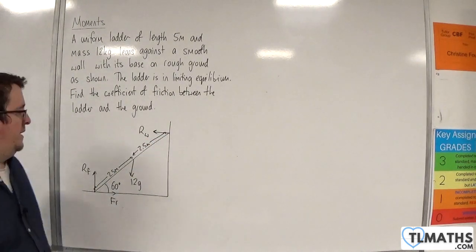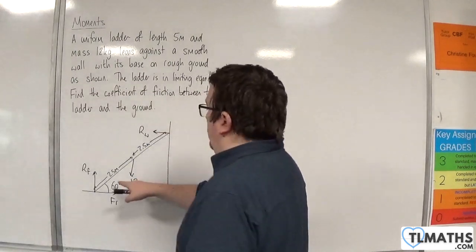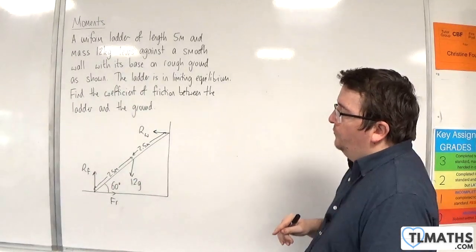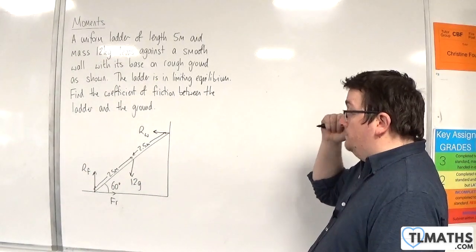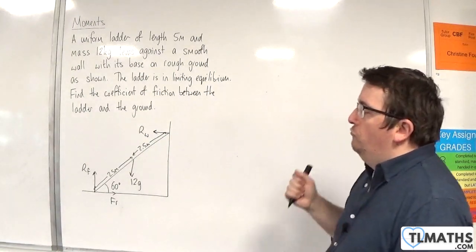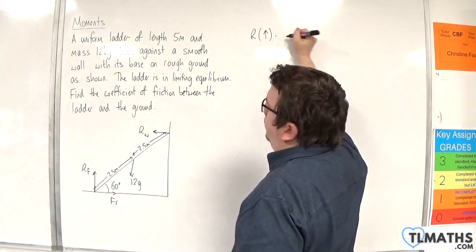So this is my diagram. Now, the difference between this and the previous example is that I now know the angle between the ladder and the floor. So 60 degrees. So let's look at resolving forces first. So I'm going to resolve vertically, taking upwards as positive.